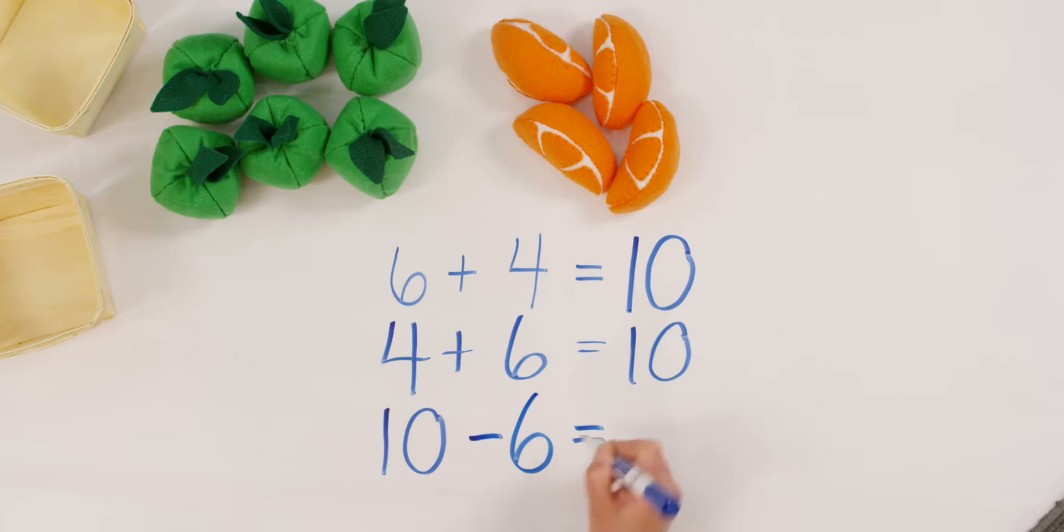And how many were left on the table? You got it. Four oranges were left. Ten minus six equals four.